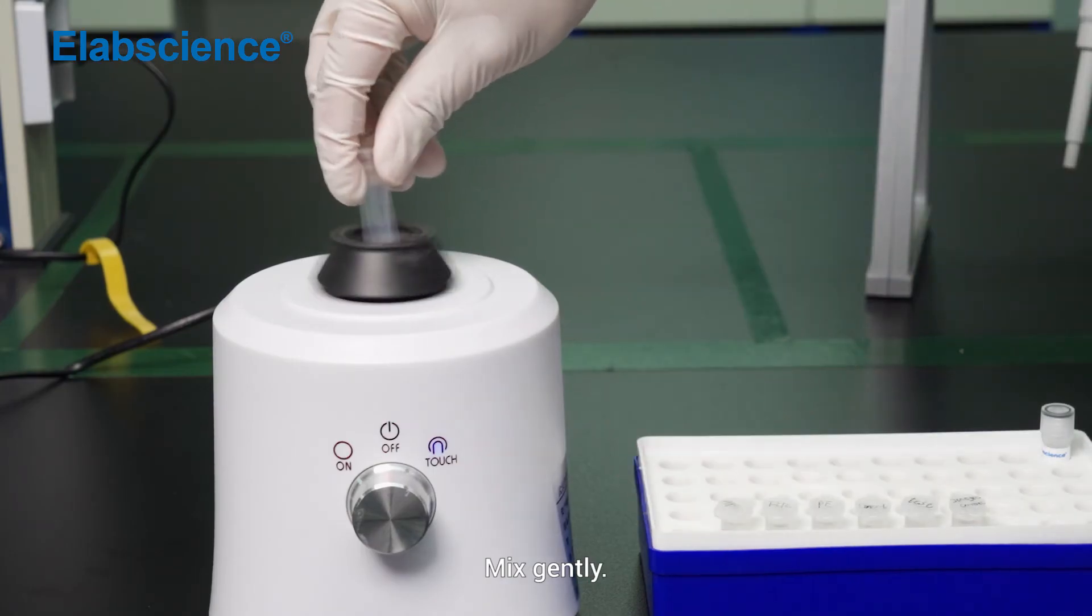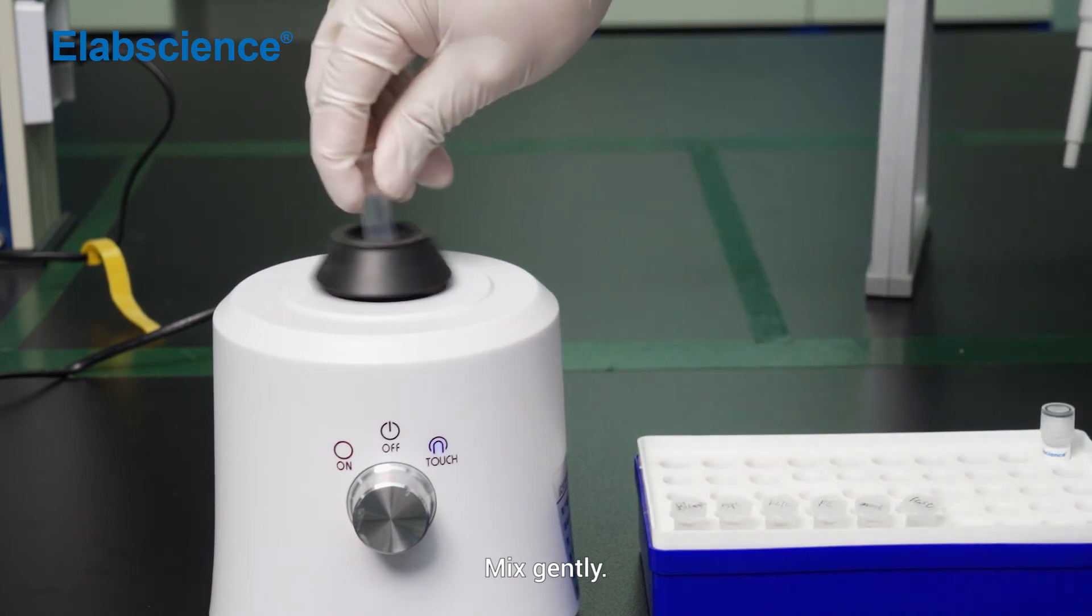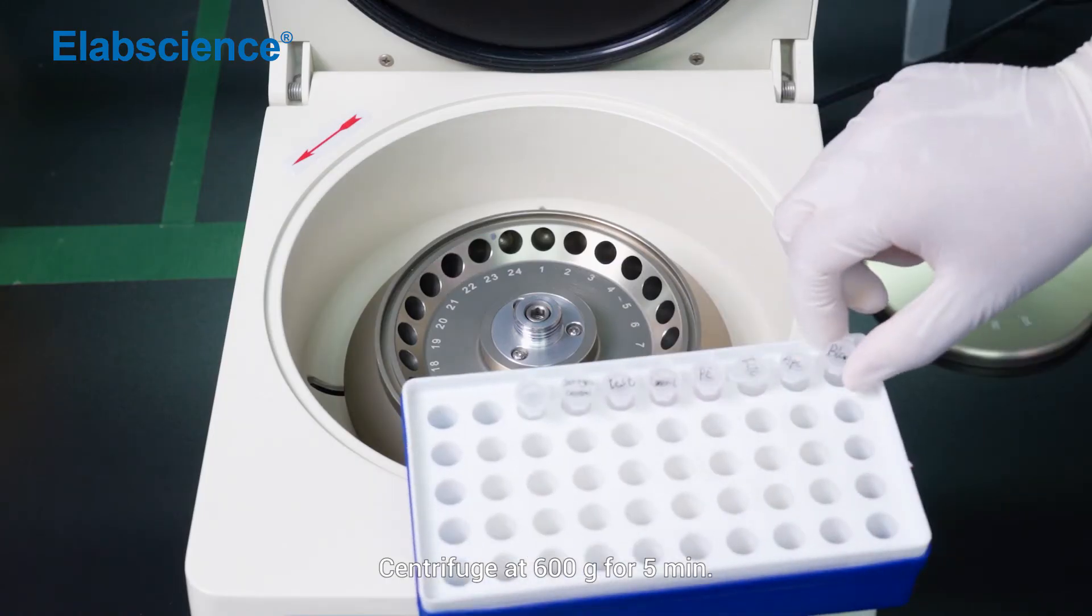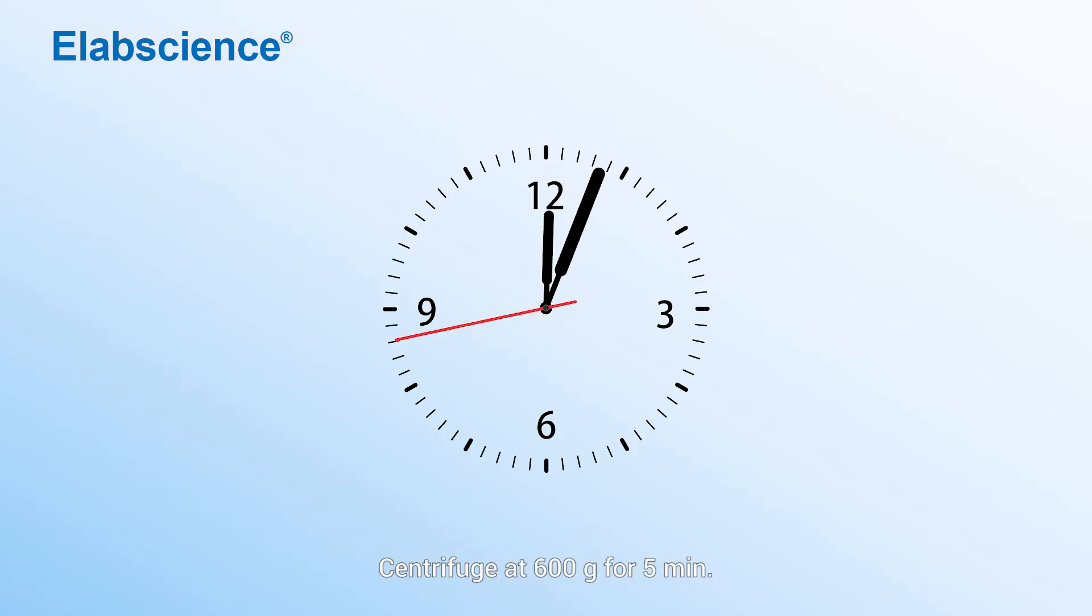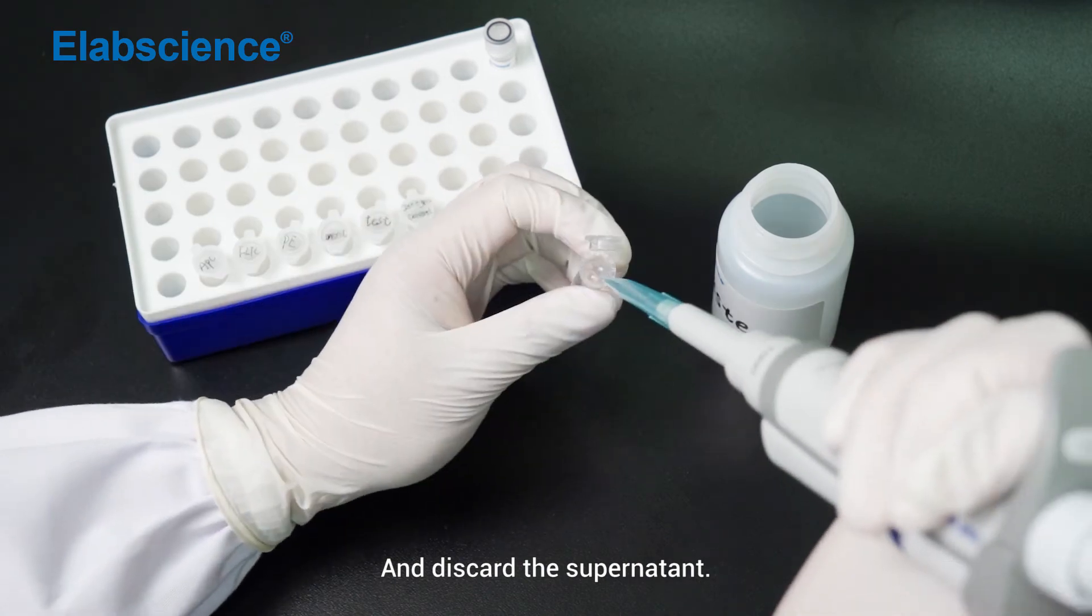Mix gently, centrifuge at 600 times gravity for 5 minutes, and discard the supernatant.